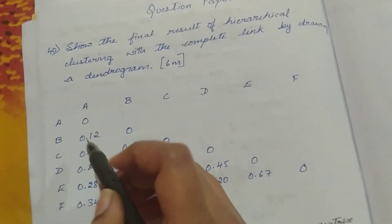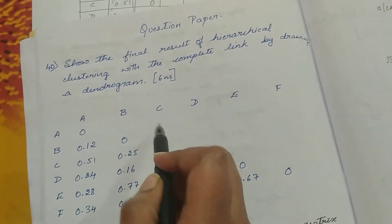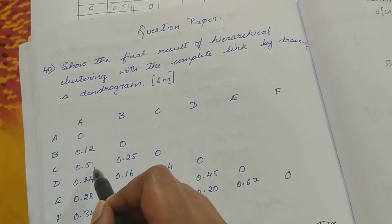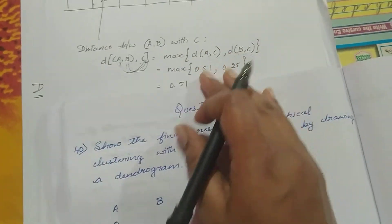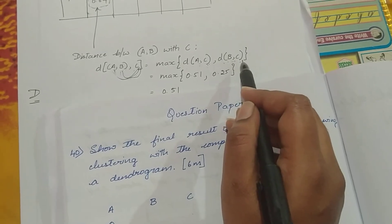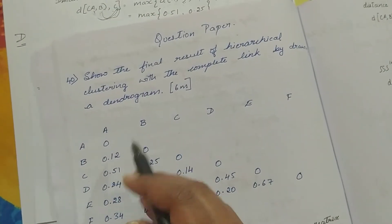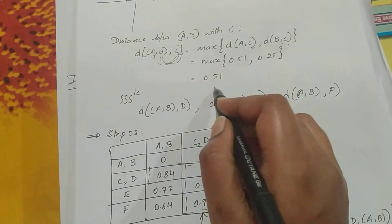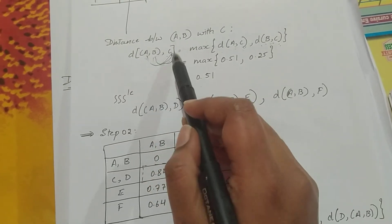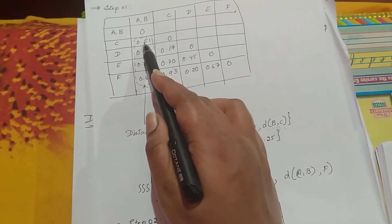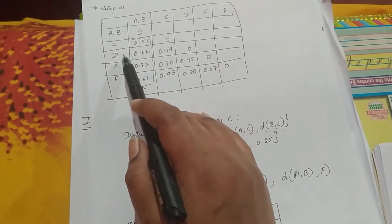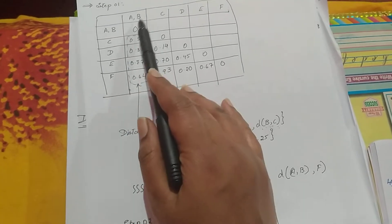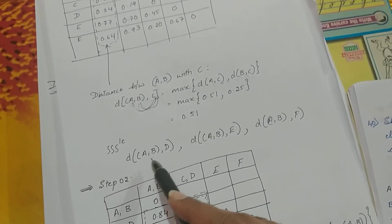From the previous data, the distance of C with respect to A is 0.51, and the distance of C with respect to B is 0.25. The maximum of these two is 0.51, so that becomes the distance of cluster AB with respect to C. We similarly calculate the distance of cluster AB with respect to D, E, and F using the same approach and fill in those values.